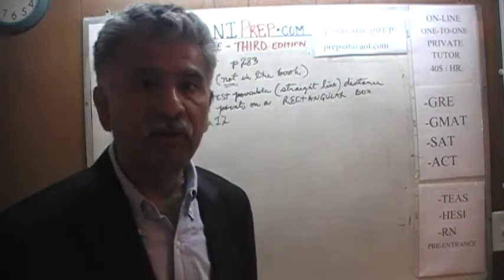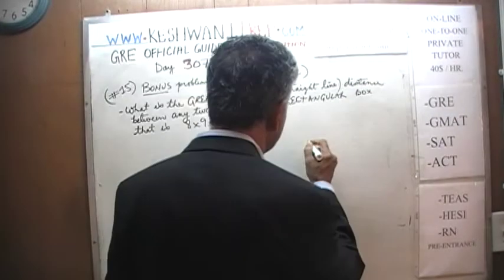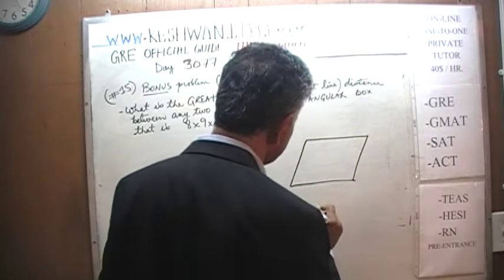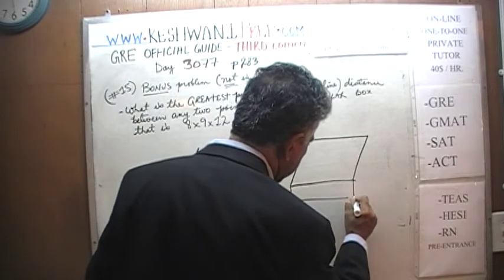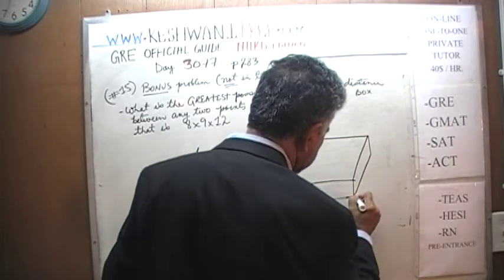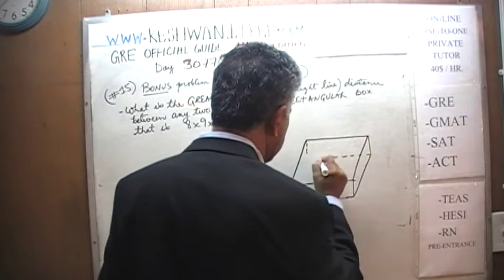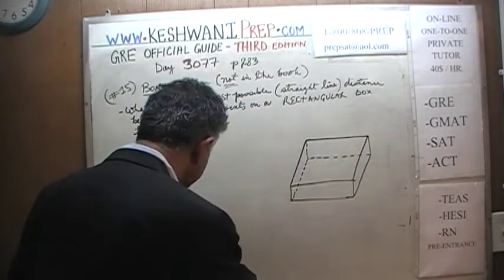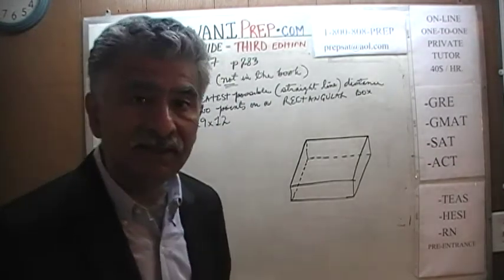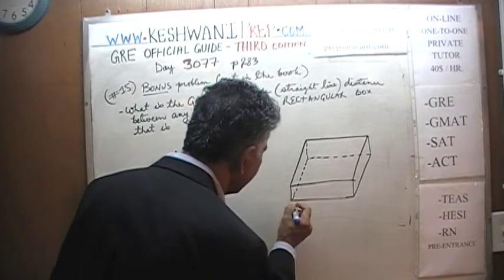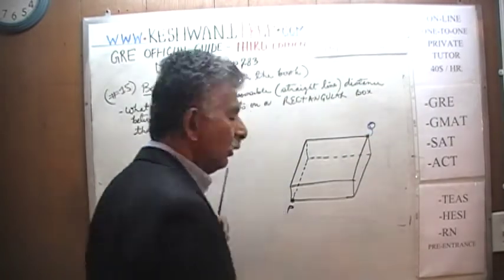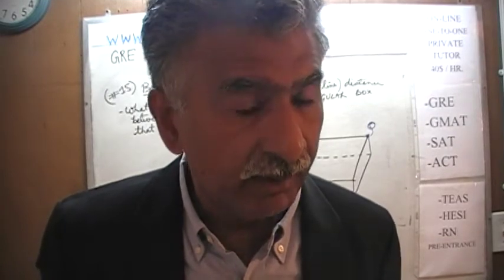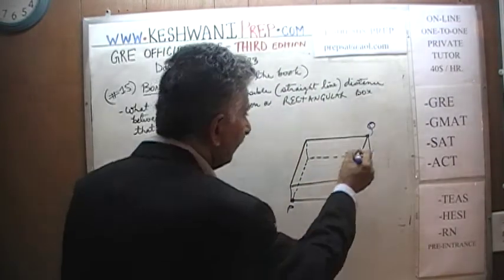A rectangular box — we are looking for the greatest possible straight-line distance. Let's draw the box. When we are looking for the greatest possible distance, which is the exact same thing we did yesterday when we were talking about the length of the diagonal, the greatest possible distance is going to be this distance right here, from P to Q.